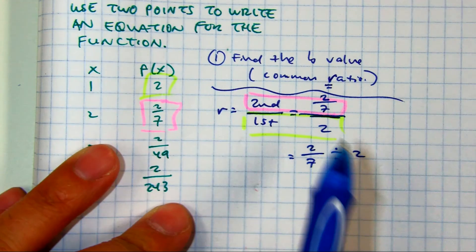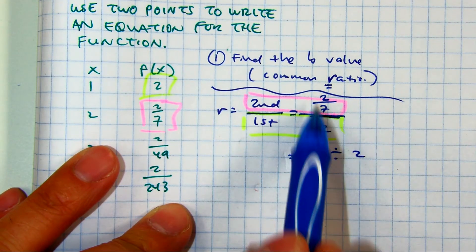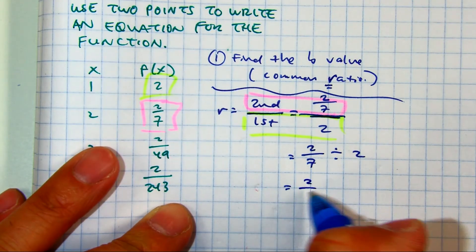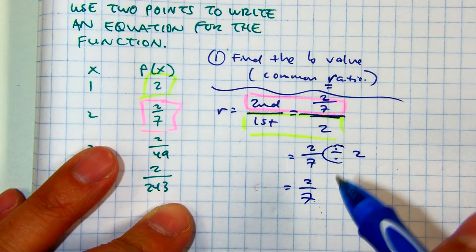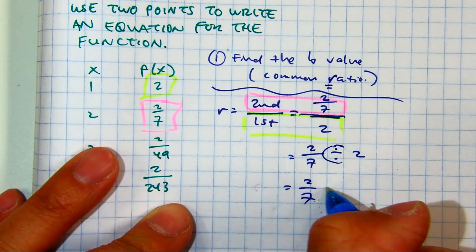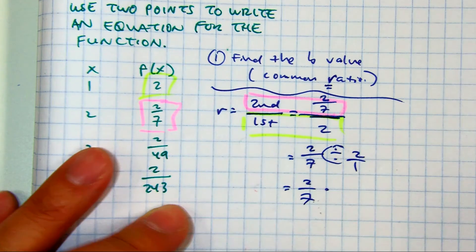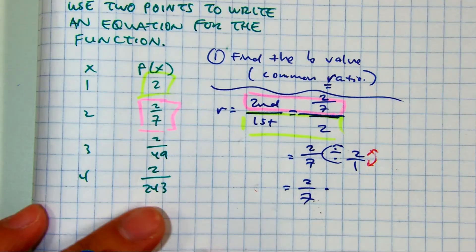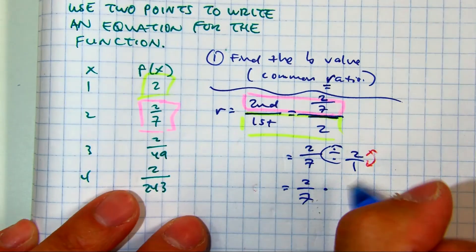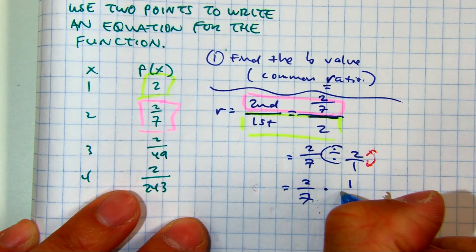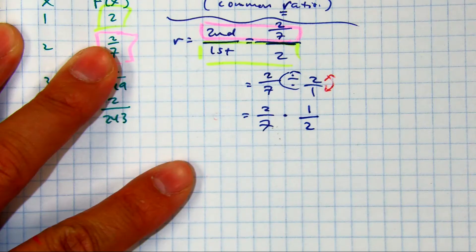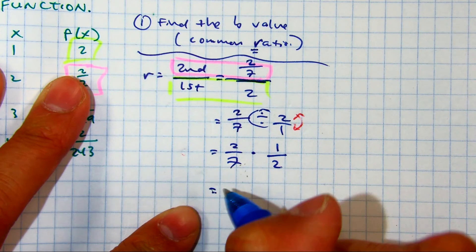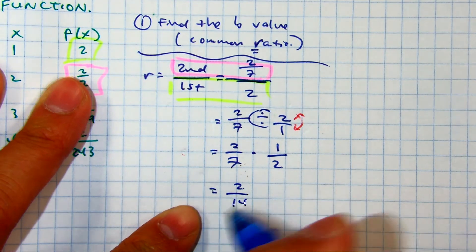These are exactly the same, right? This is a vertical division, and this is horizontal. Class, the division sign turns into... How do you make two a fraction? And what do you do with that? You take the reciprocal. So what does that become? One over two. You can just multiply across. Which reduces to one seventh.